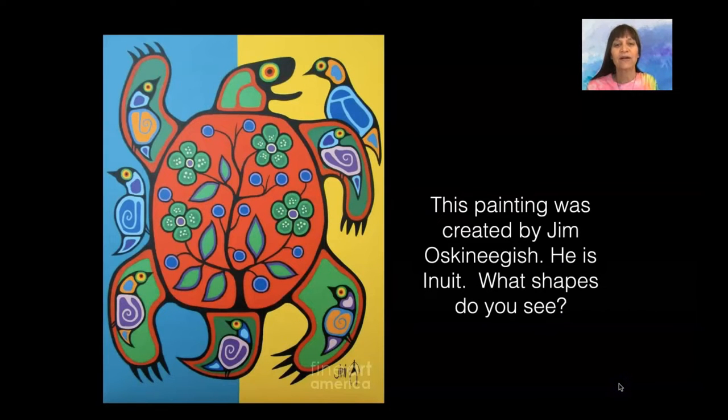This painting was created by Jim Ashkenigish. He is Inuit. What shapes do you see? Maybe you see circles, diamond shapes, spirals. And how many birds are there? Can you count them up?